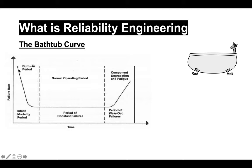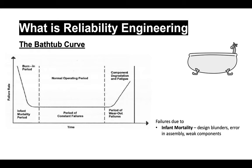Products during their initial phase will experience higher failure rates. This period is called the infant mortality period. These higher failure rates could be due to errors in the design that were undetected and escaped into production, errors in the assembly of the final product, weak components in the system, or material defects causing higher failure rates.